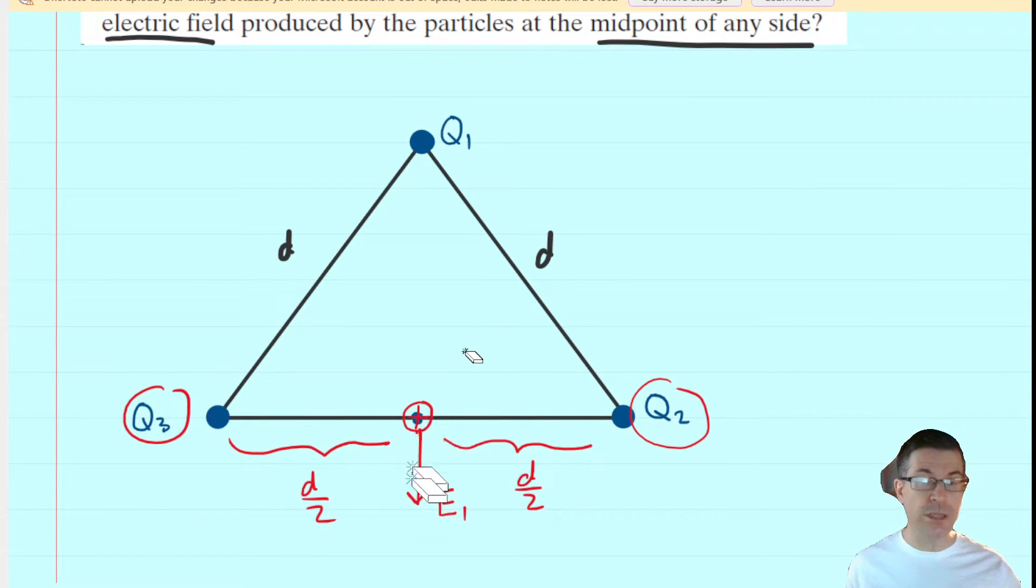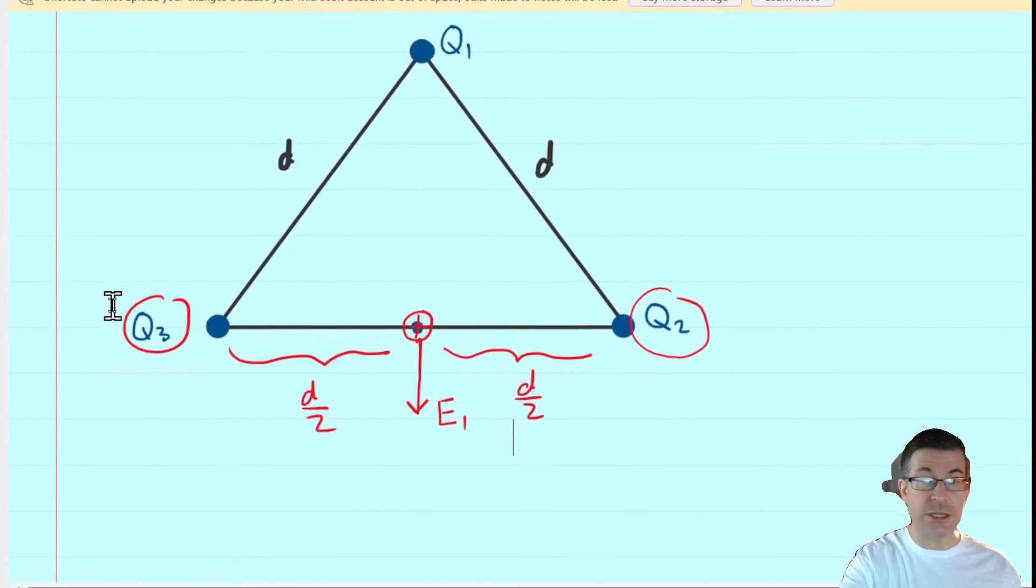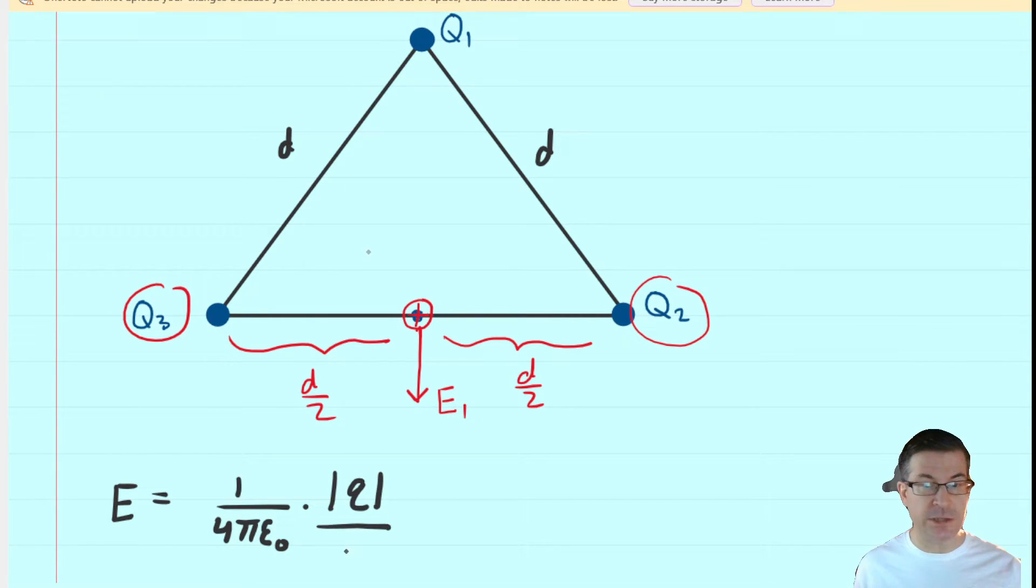And that means that the only electric field we have to consider is the electric field E1. So that becomes our task right now is to calculate E1, and that will give us the overall electric field at that midpoint. Now, the electric field produced by any point charge is going to equal 1 over 4π times this physical constant ε₀ multiplied by the magnitude of the given charge and then divided by the distance squared.